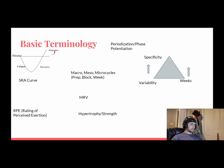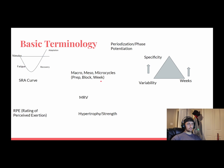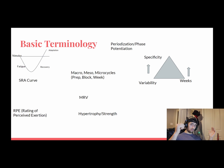If we can chain as many of these SRA curves together as possible, that will lead to a very successful block. Your macro, meso, and micro cycles break down your whole training cycle. Your macro cycle is your long-term prep — the entire span from when you start writing your program to the day you want to max out, have a meet, or reach some sort of training event.